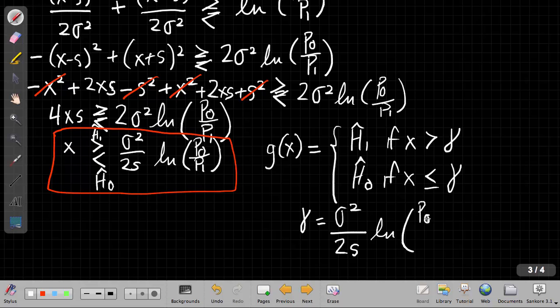So a couple sanity checks here. First on a unit check, ratio of probabilities is unitless. Log of that is still unitless. I've got something that's sigma squared over S will be the same units as X. The units of sigma squared will be the units of X squared. S is the units of X. So that makes sense to be comparing X against gamma from a unit point of view. This right-hand side is basically the reciprocal of the distance between the two means relative to the variance. So it's the variance divided by the distance of two means.